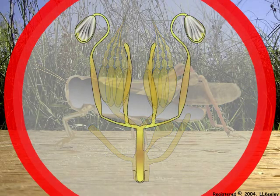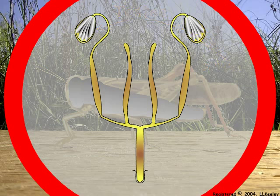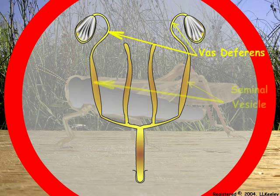In males, testes also consist of follicles where the sperm are matured as they progress from the tip to the base of the follicle. Mature sperm pass from the follicle to the vas deferens into the seminal vesicle.